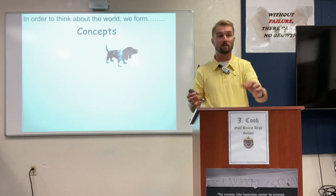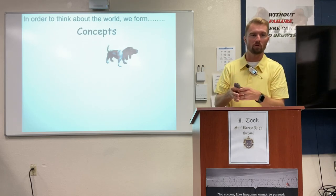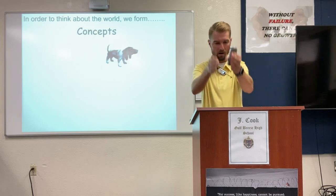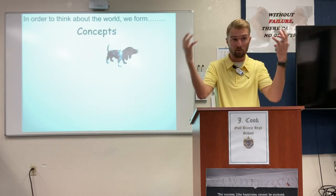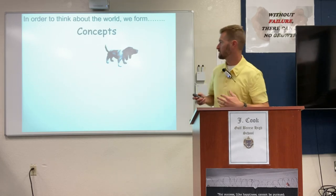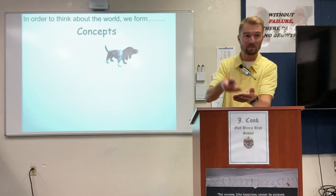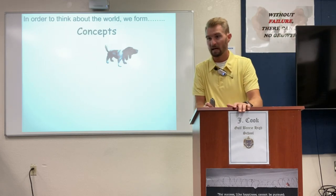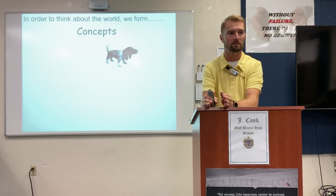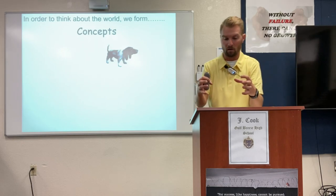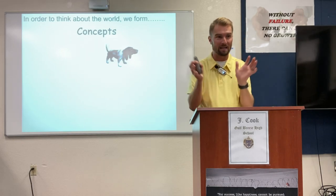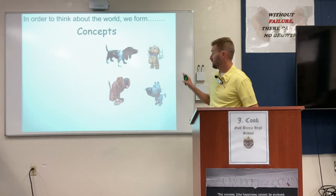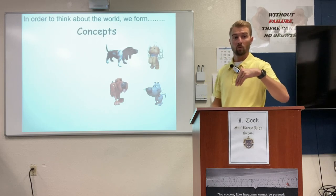Piaget calls this a schema. A child develops a schema for what is a dog — they don't think of it as a category of animals, they think 'dog is a thing.' But those concepts expand. Piaget calls this schema assimilation — you learn there are other concepts inside this category. It's not just one type of dog in the world; there are other animals that look like dogs but all fit within our conceptualization of a dog.